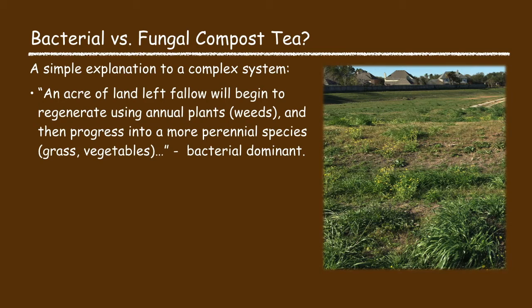So what is the difference between bacterial versus fungal compost tea? A simple explanation for what is a complex system is that if you consider what happens in nature when a piece of land is left fallow, it will begin to regenerate using annual plants, and then the plant species slowly change and progress into a more perennial plant species. This is a bacterial dominant soil environment.